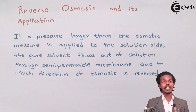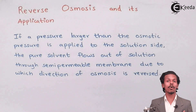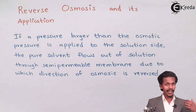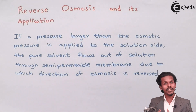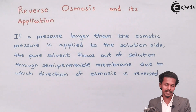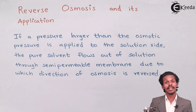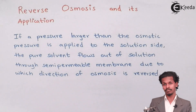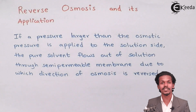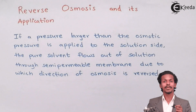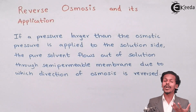In osmosis, the liquid flows from lower concentration to higher concentration, and it is a spontaneous flow — we cannot stop it. To prevent it, we apply osmotic pressure so that the solvent passing through the semi-permeable membrane from lower to higher concentration is stopped. But in reverse osmosis, we apply even higher pressure to the higher concentration solution itself, so that the flow of solvent is reversed — from higher concentration to lower concentration. This reverses the natural process of osmosis, hence the name reverse osmosis.